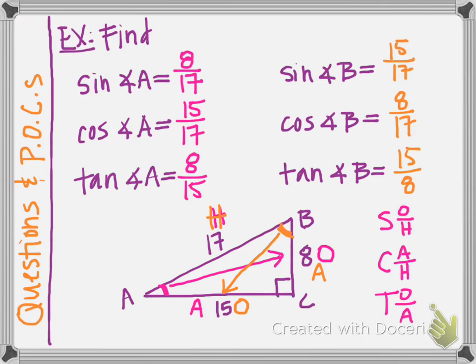Take a look at these six ratios for this one triangle. If you compare angle A's ratios with angle B's ratios, you'll notice that two pairs of ratios are the same. The tangent ratios are reciprocals of each other. For example, if you know the cosine of angle B is 8 over 17 and you need that ratio, you could also use the sine of angle A — those two mean the same thing.